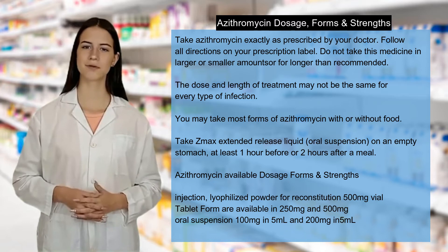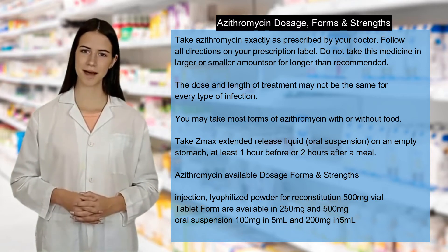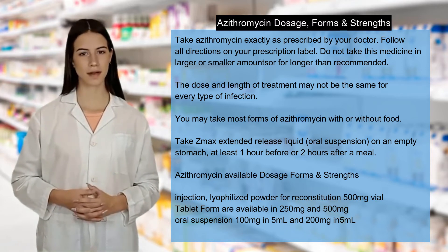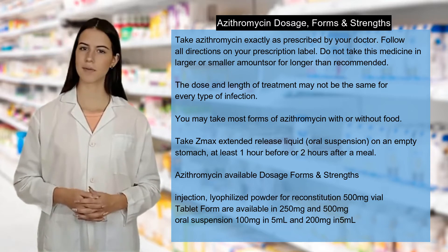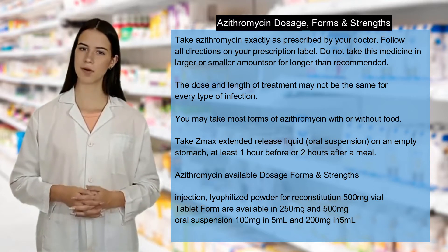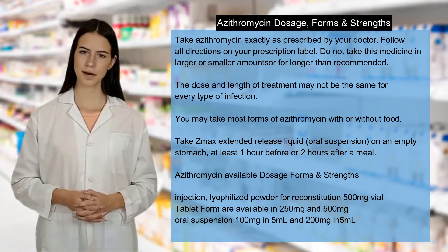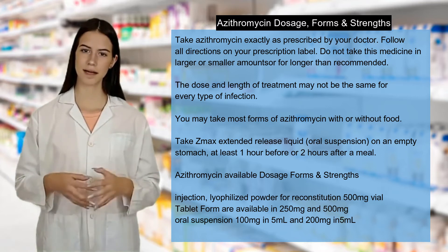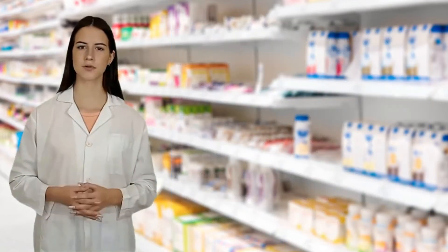Azithromycin available dosage forms and strengths: Injection, lyophilized powder for reconstitution, 500 mg vial. Tablet form is available in 250 mg and 500 mg. Oral suspension 100 mg in 5 mL and 200 mg in 5 mL.